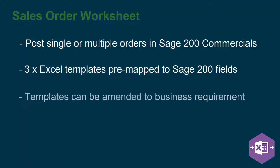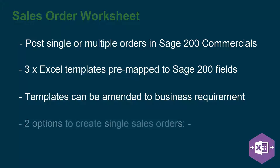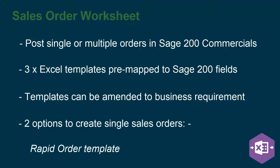If the default templates provided don't quite meet your business requirements, they can be easily amended to suit. Excel DataBridge provides two options for creating single sales orders in Sage 200: the Rapid Order Template and the Single Line Template.